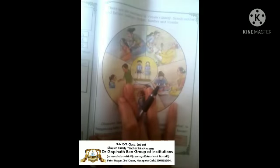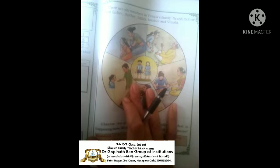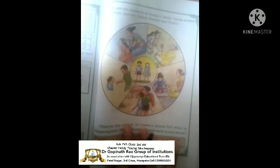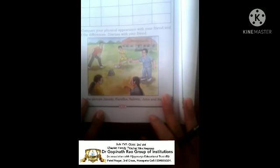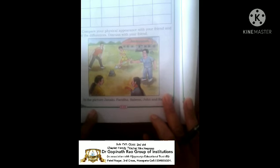Children, see this picture — they all look different but they all come to school together and help each other. With whom do you eat in school? With your friends. And you also play with your friends at home or school, enjoying together.